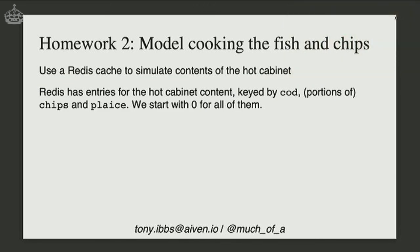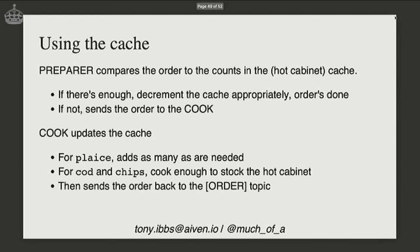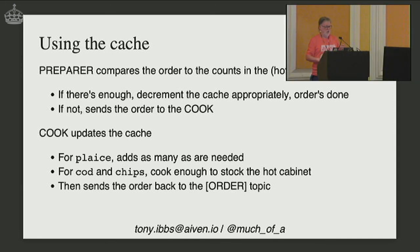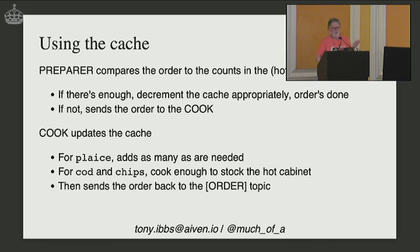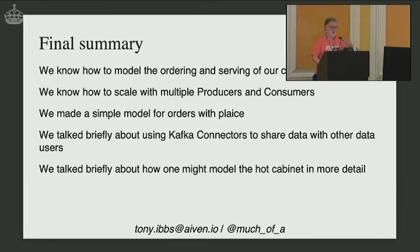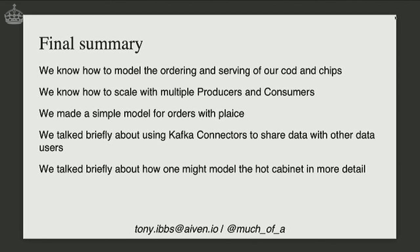Homework two: the cook modelling was atrocious — we should use a Redis cache to simulate the hot cabinet, with entries for available portions of cod, chips, and plaice starting at zero. The preparer compares the order to what's in the cache; if there's enough, it decrements the cache and is done; if not, it sends the order to the cook. The cook adds portions to the cache and sends the order back, at which point the preparer takes stuff out of the cache. This is actually a lovely useful case for Redis.